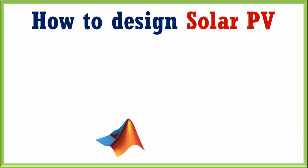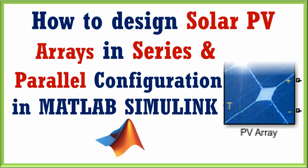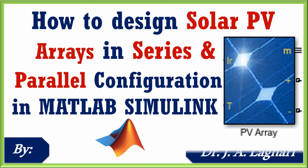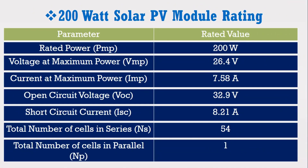Assalamualaikum friends. Welcome to this MATLAB tutorial. Today I am going to teach you how to design solar PV arrays in series and parallel configuration in MATLAB's Simulink software. Before explaining the series and parallel configuration, first look at the table which shows the rating of a 200W solar PV array. The maximum voltage and current for this 200W solar PV array are 26.4V and 7.58A respectively.